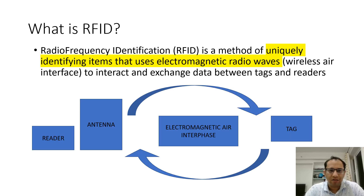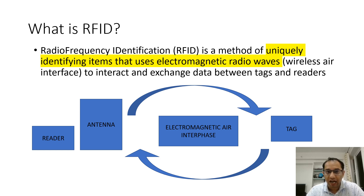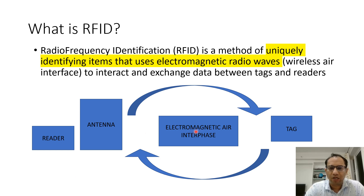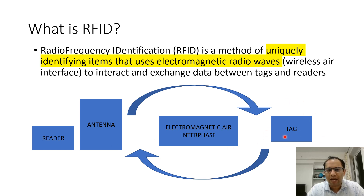So what is RFID? RFID or radio frequency identification is a method of uniquely identifying items that uses electromagnetic radio waves — that is, the wireless air interface — to interact and exchange data between tags and readers. Basically you have an electromagnetic air interface, it is wireless, and you are interacting between the tag placed on the bag and an antenna and a reader which accesses the information from it.